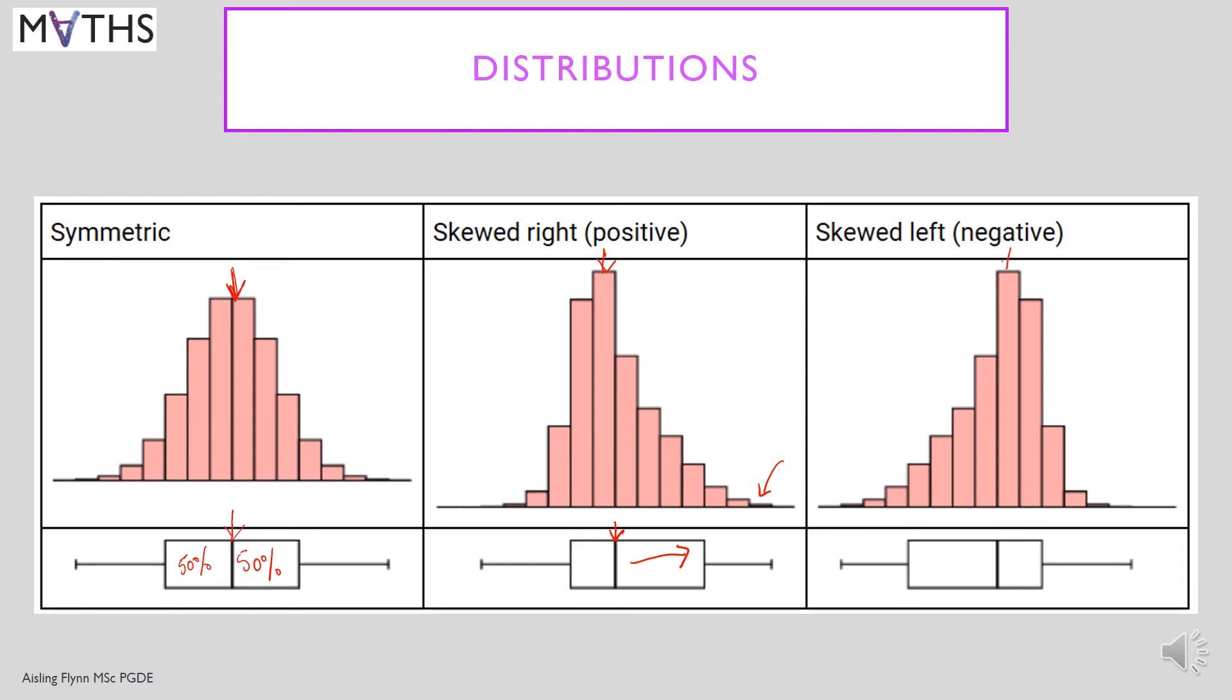And for the third example, here's the peak. And you can see that there are some very small values here. And the tail is pulled to the left or to the negative side of the number line. So there we have it. Symmetric, skewed right and skewed left.